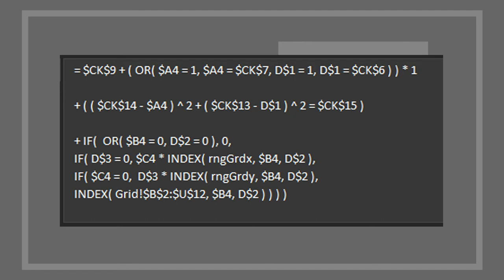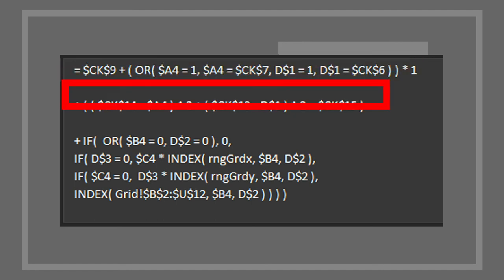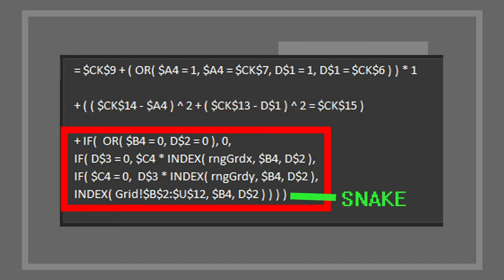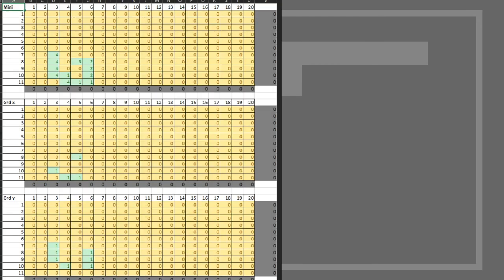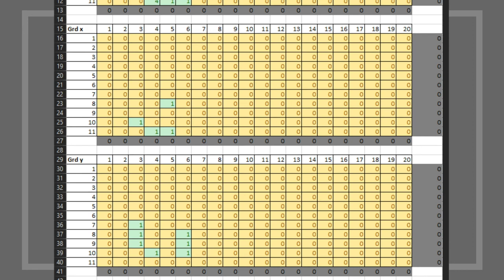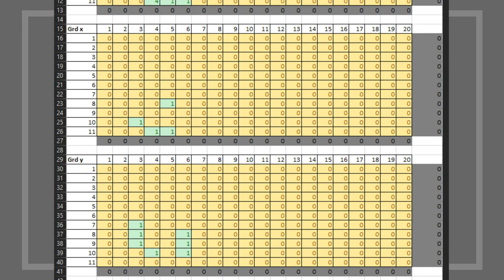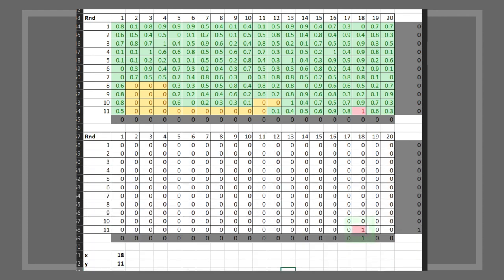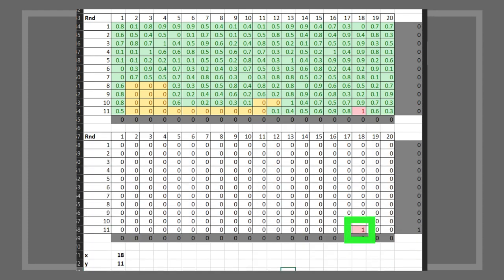And here's the formula. This section puts the frame around the outside. This is the flower. This section is Snake. And these parts fill the gaps in between. Part of the equation references this mini-table, which shows which box each part of Snake is in. These grids show when to fill the blanks in between, and these grids randomly place the flower in the next location, making sure to put the flower where Snake is not.